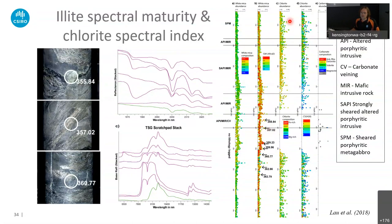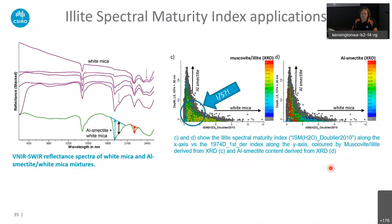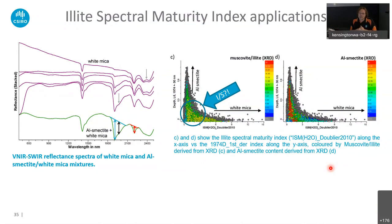You can do the same thing for chlorite — there's also a chlorite spectral maturity index available. This is interesting for exploration, but also for the resources industry: if you're going into mining and want to process ore, clay minerals often pose quite a problem, especially smectites or interlayered illite-smectite. People interested in porphyry copper deposits are faced with lots of these minerals — different kinds of micas, different kinds of illites and interlayered clays — and that's something we're working on at CSIRO.